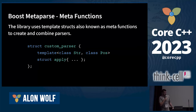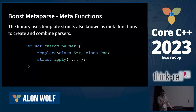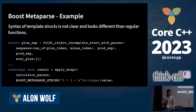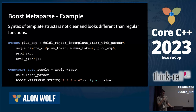The library uses template structs, which are sometimes called meta functions. This is what a typical parser looks like. We have a struct called custom parser — you can think of it like a class. You can think of the inner apply struct as a method that takes the string and the current input position. The syntax of using template structs is not very clear; it is different from the syntax we are used to, and we have a lot of nested angle brackets.